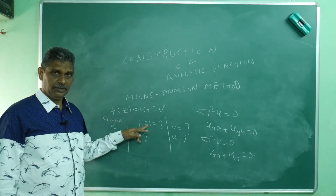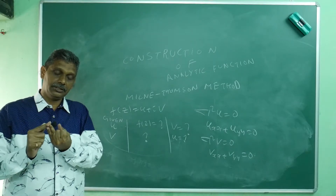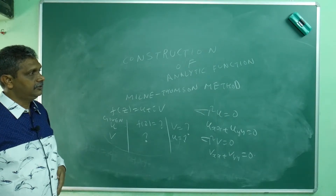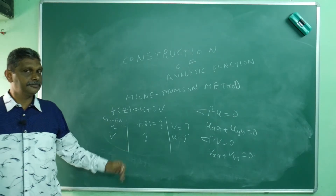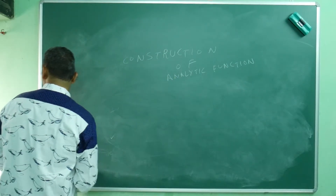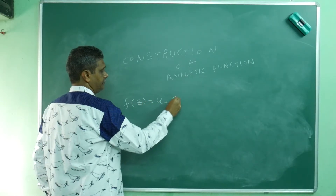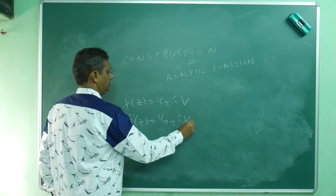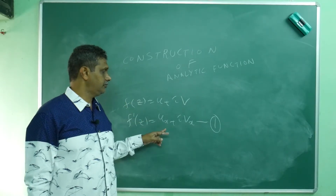So they will give u and ask for f(z) or v, or give v and ask for u or f(z), or ask you to prove it is harmonic and find the complex conjugate — these three types of questions. Always start by writing f'(z) = u_x + iv_x, differentiating with respect to x.